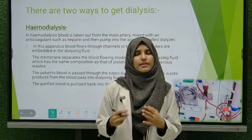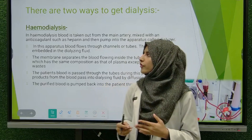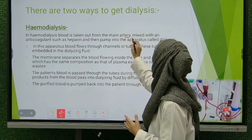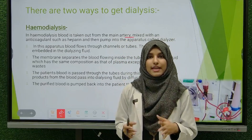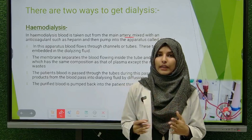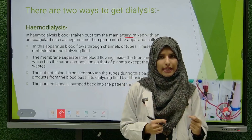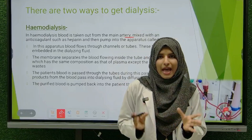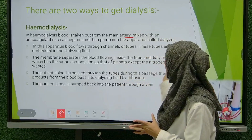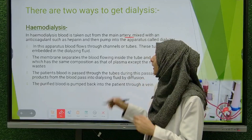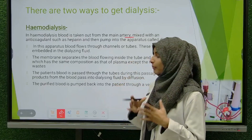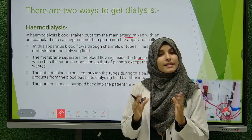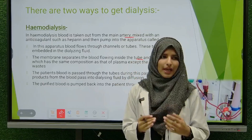Hemodialysis is a procedure in which blood is taken out from the main artery, mixed with an anticoagulant such as heparin, and pumped into an apparatus called a dialyzer. In this apparatus, blood flows through tubes and channels, and these tubes are embedded in dialyzing fluid. A membrane separates the blood flowing inside the tube from the dialyzing fluid.